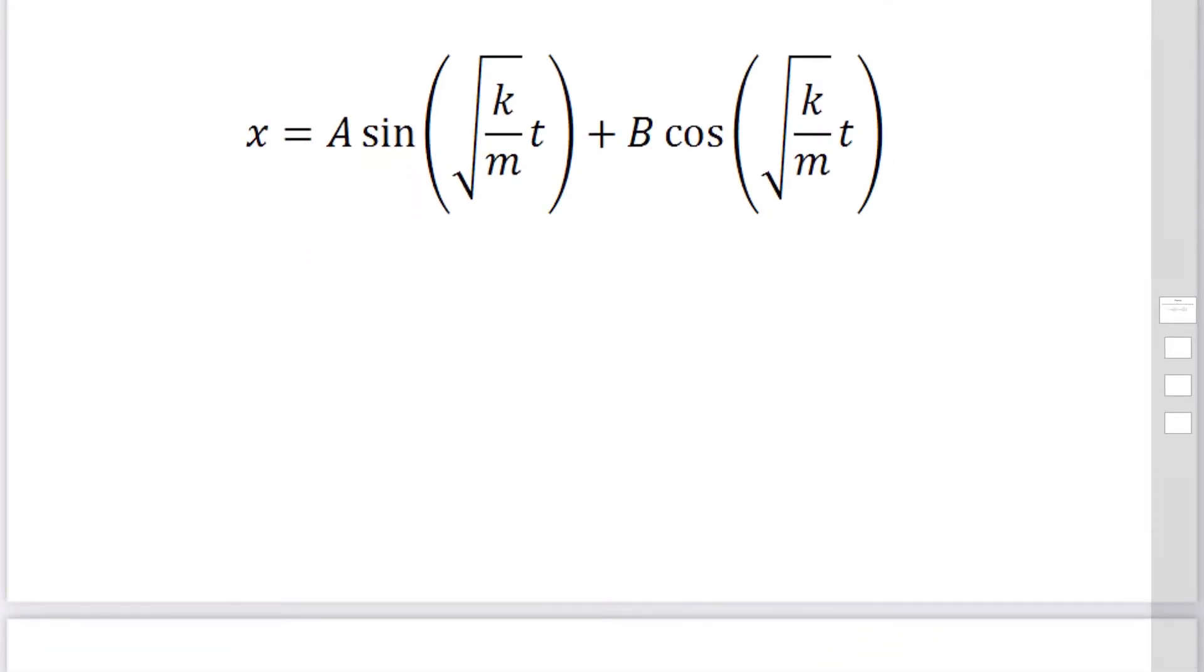We start with the equation of motion expressed as m second derivative x with respect to t equals minus kx. This is the equation of motion.